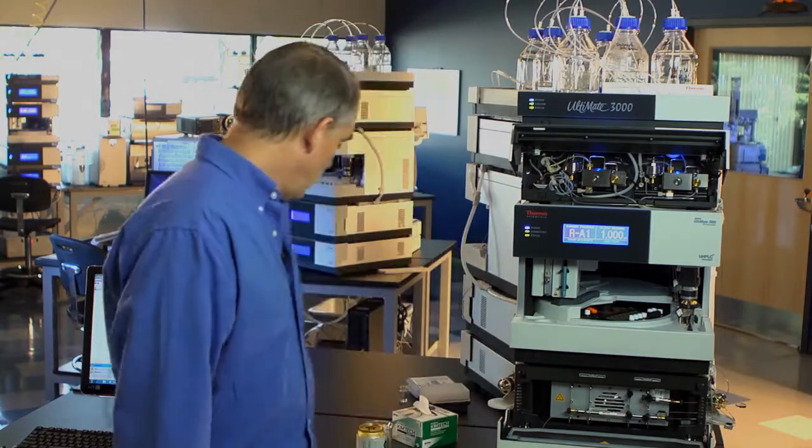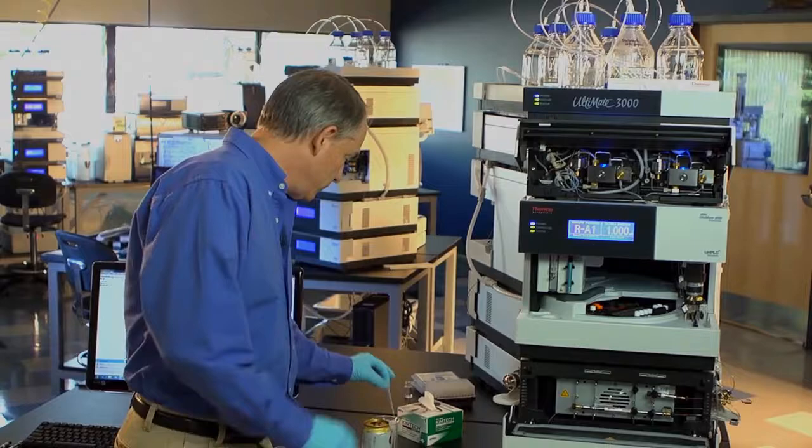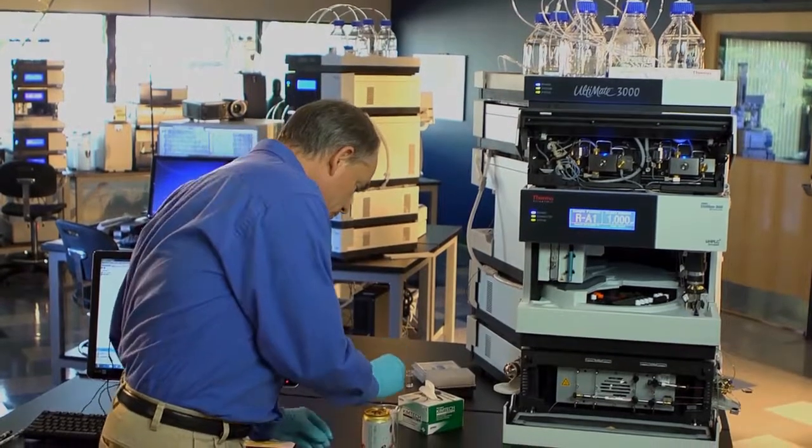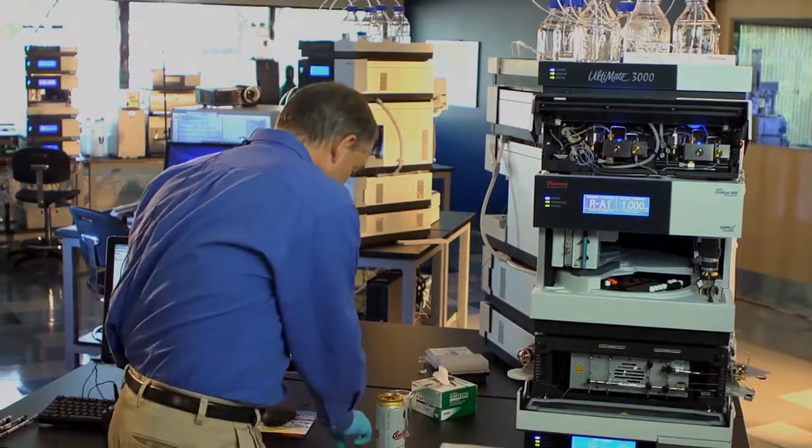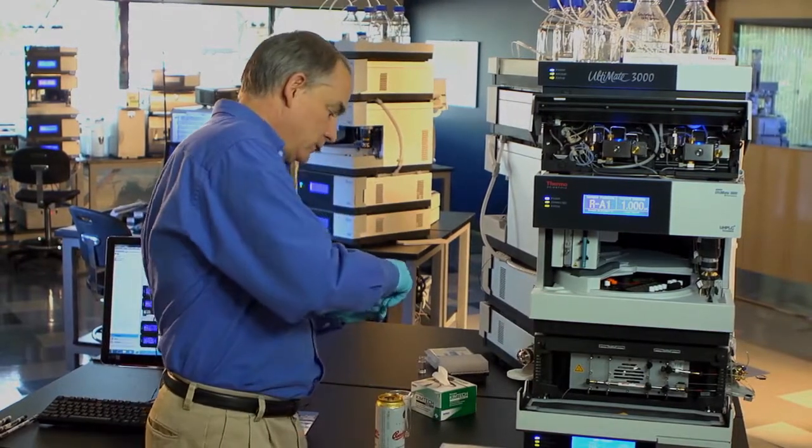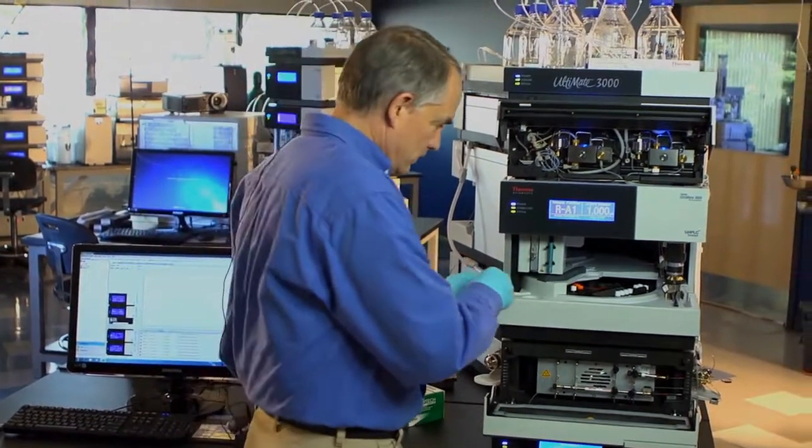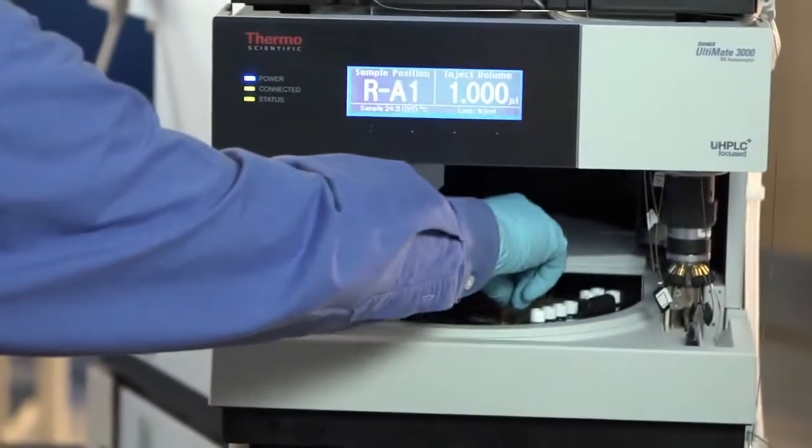Let's look now at how easy it is to analyze a beer sample using this method. Really all we have to do is take the beer, put it into the auto sampler vial, then into the auto sampler and now it's ready to run.